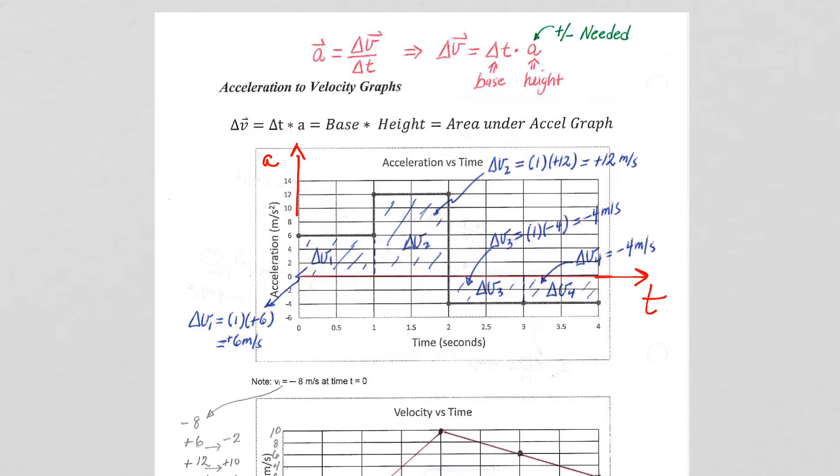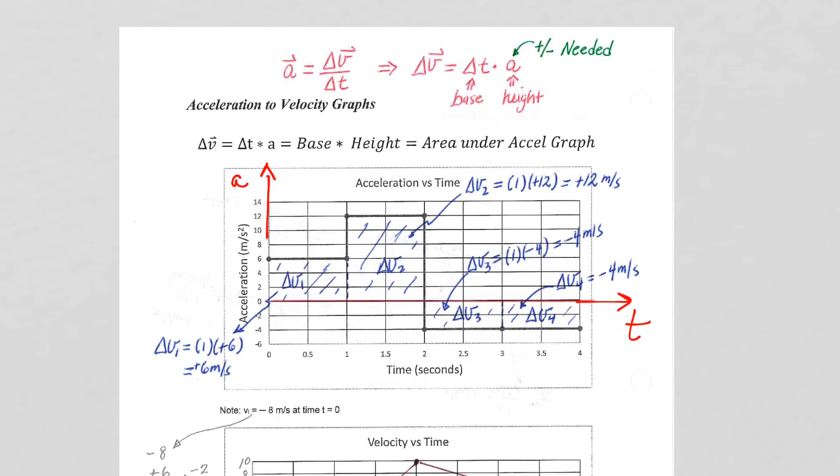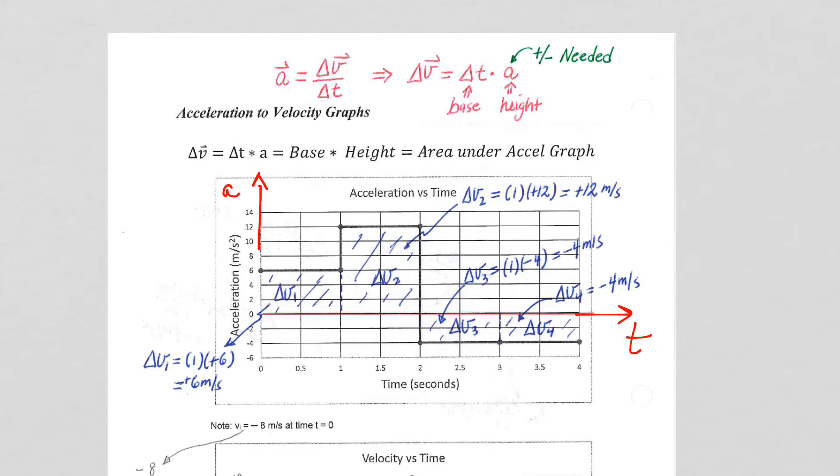And when we go from an acceleration graph to a velocity graph, we let our equations guide us in terms of what we are doing to confirm our calculation for either a slope or an area. And in this case,